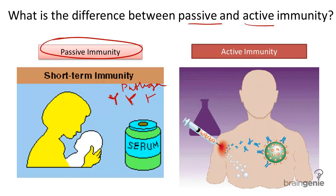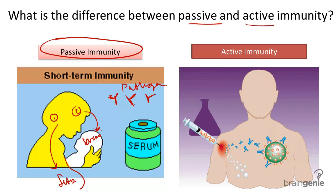So an example is a fetus inside her mother's womb receiving antibodies from her mother through the placenta. Another example is a mother transferring her antibodies to the born child through breast milk.